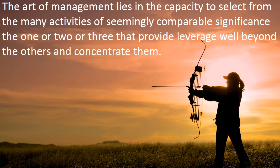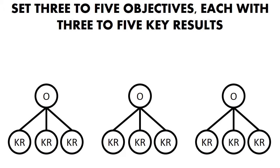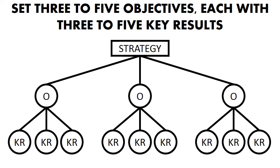OKRs focus our effort on a few important objectives. Set three to five objectives, each with three to five key results. At the organizational level, we'll have maybe three objectives, each with three key results. All of these objectives together should be pointing towards our north star, which is strategy. The objectives should help us accomplish our strategy, which in turn helps accomplish ROI. Strategy is the thing that links all of these objectives throughout the organization together.